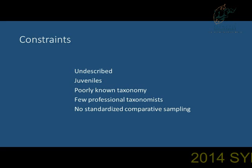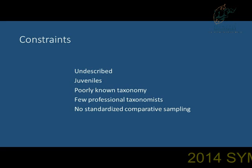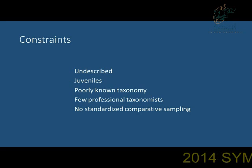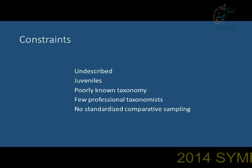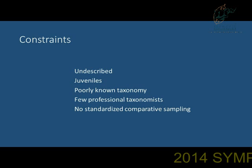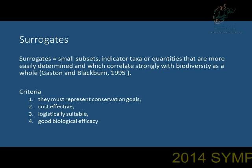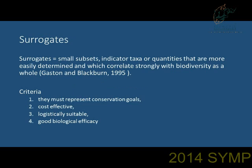There are a lot of juveniles — it's very difficult to identify a juvenile at the species level. There's poorly known taxonomy, some families are just no-go areas for some people. There are very few professional taxonomists; in South Africa there are probably only two or three really good spider taxonomists. And there's no standardized comparative sampling. So the idea, as Ian spoke about, is using the environment as a surrogate.